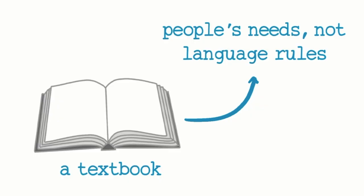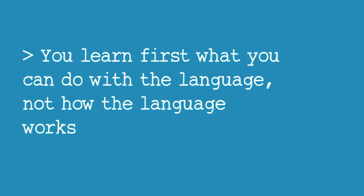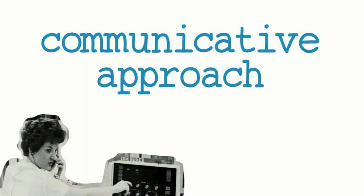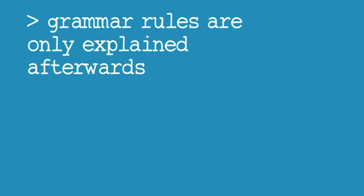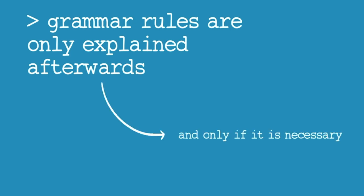In textbooks, you learn first what you can do with a language, not how the language works. In language teaching, this is called a communicative approach, and is based on the idea that learning a language successfully comes through having to communicate real meaning to real people. Throughout the different lessons in your textbook, you learn new words and structures, and new contexts where to use them. The grammar rules behind those real-life examples are only explained after you learn how to use them, and only if it's really necessary for you to know them.